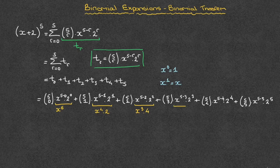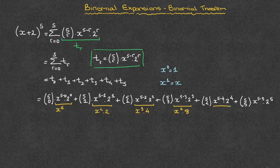In the next term, we have x to the power of 5 minus 3 times 2 to the power of 3. Well, x to the power of 5 minus 3 is x to the power of 2, or x squared, times 2 to the power of 3, which is 8. In the next term, we have x to the power of 5 minus 4 times 2 to the power of 4. x to the power of 5 minus 4 is x to the power of 1, which is just x. So we'll have x times 2 to the power of 4, and 2 to the power of 4 is 16.